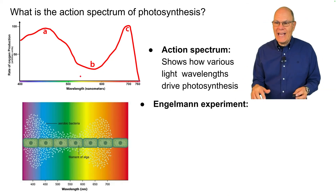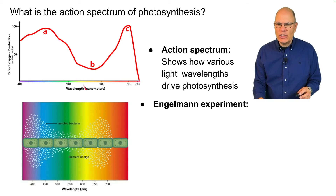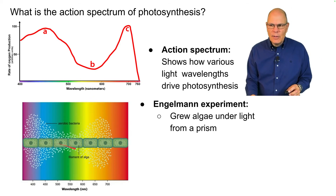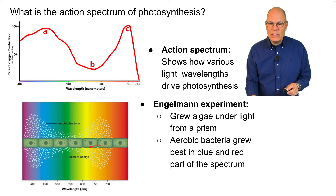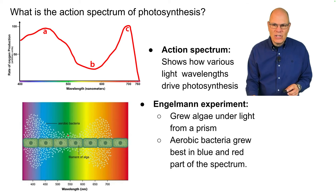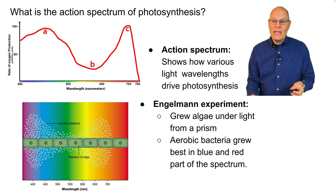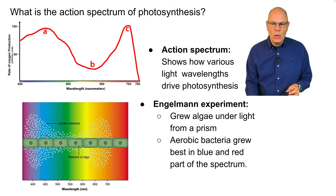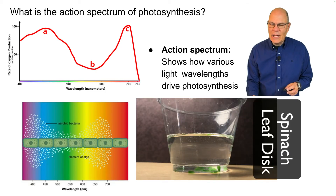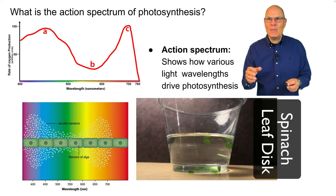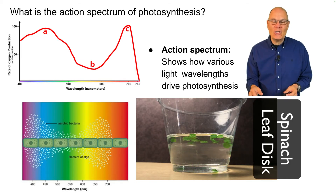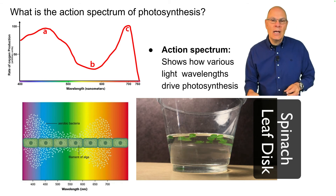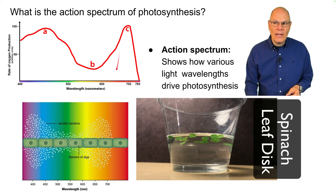This was determined by the Engelman experiment. Thomas Engelman in the 1800s grew a filament of algae under light from a prism that divided light into its various wavelengths. Aerobic bacteria grew best around the filament in the blue and red parts of the spectrum because that's where the most oxygen was being produced. You can recreate this with the famous photosynthesis spinach leaf disc experiment, where discs of spinach leaves rise based on the amount of oxygen they produce, testing variables like light intensity or wavelength.